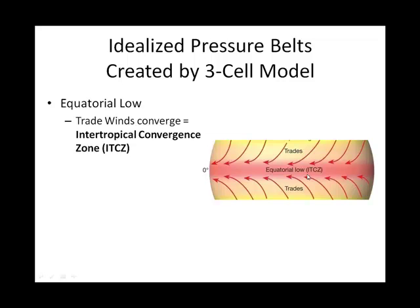I've been introducing you to the intertropical convergence zone. The word convergence is talking about the trade winds converging there — our northeasterly trades in the northern hemisphere and our southeasterly trades in the southern hemisphere. So we generally have what we call an equatorial low, a band of low pressure at the Earth's surface in that region where the Hadley cells meet.